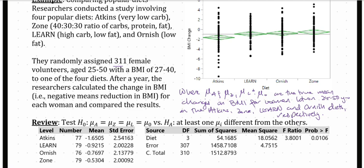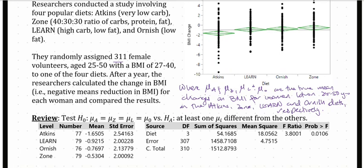The alternative hypothesis says at least one mean is going to be different from the others, meaning at least one of those diets will have a different change in BMI. It could be that all four differ, only one differs, or two of them differ from the rest. The alternative hypothesis is as general and nonspecific as possible — just like writing an alternative hypothesis for multiple regression, we say at least one of the parameters differs, and we'll do a follow-up analysis later to figure out which one.